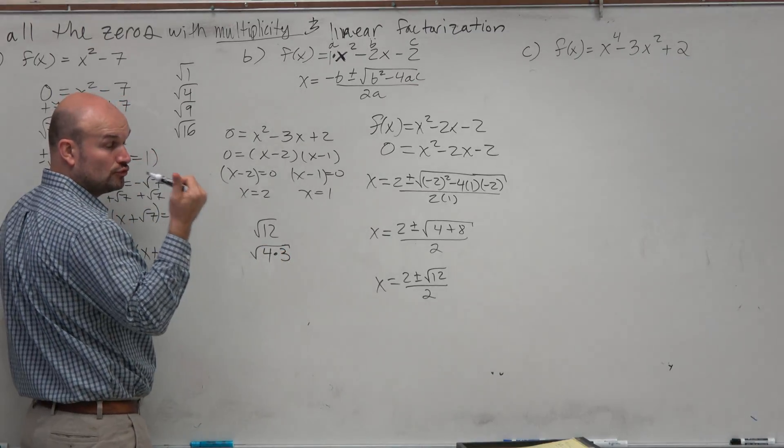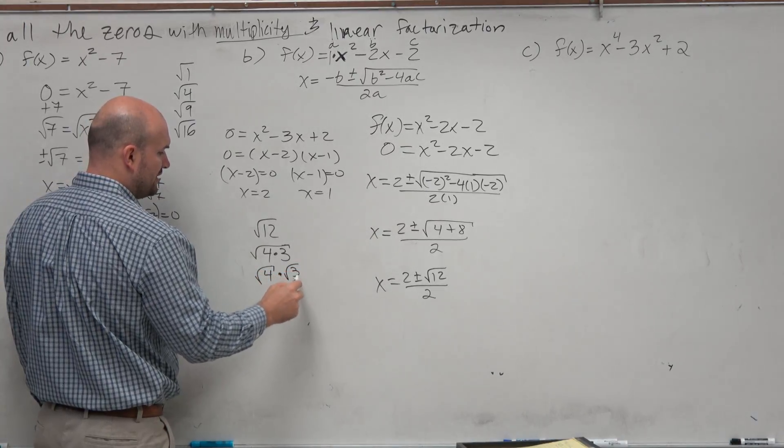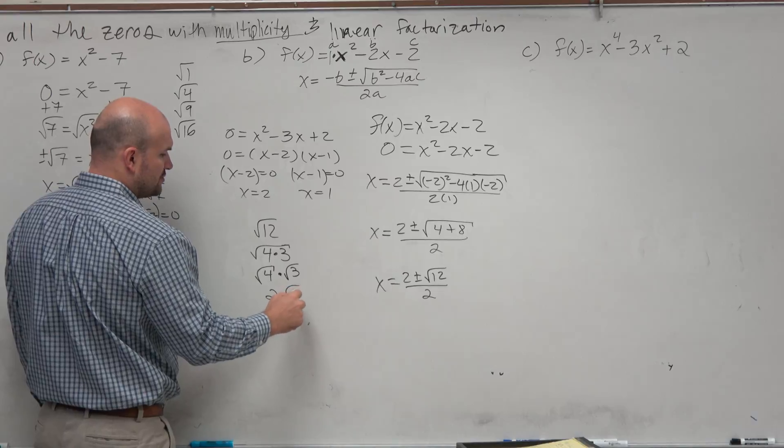And then using the rules of radicals, we could rewrite that product as √4 × √3, which can simplify to 2√3.